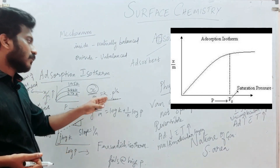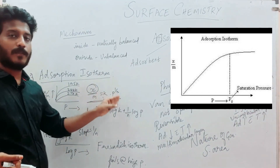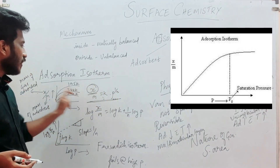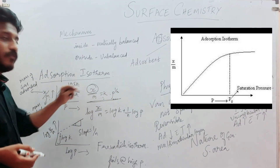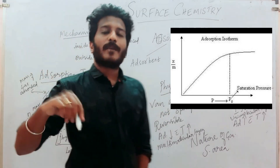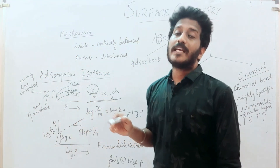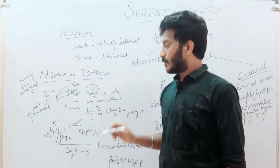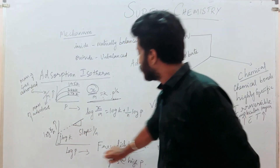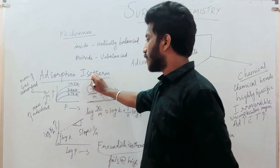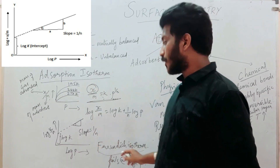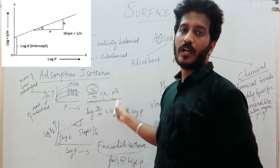So x by m equals k times p to the power of 1 by n. If you plot at different temperatures, you get different curves. This curve is a mathematical expression with a slope. If you interpolate it, this is called the Freundlich isotherm. This is the adsorption isotherm, and a scientist called Freundlich proposed it.